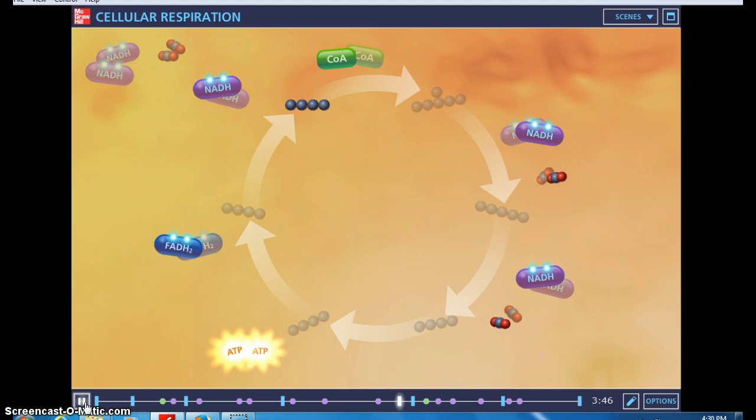In order to understand how the majority of the energy is produced by aerobic respiration, we need to follow the NADH and FADH2 molecules to the next stage, the electron transport chain.